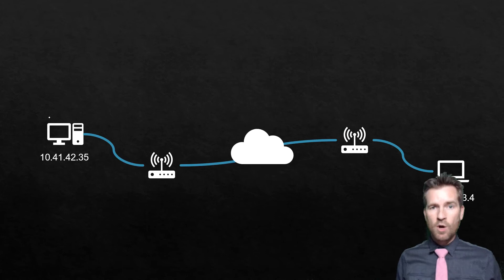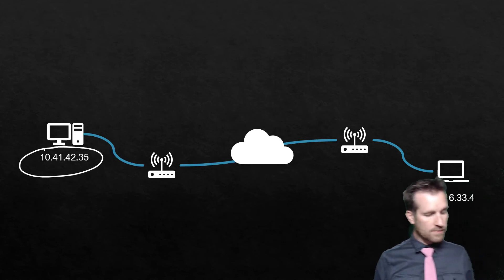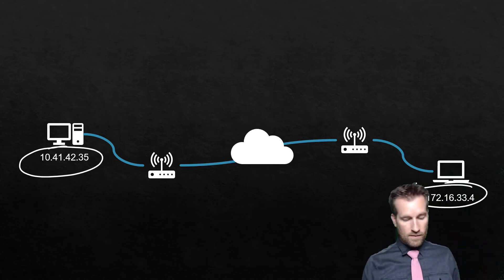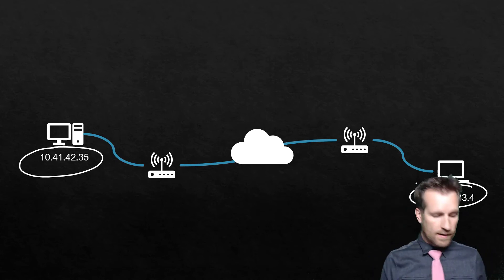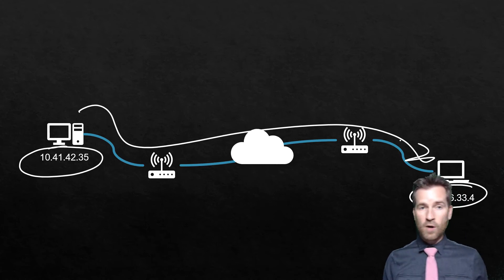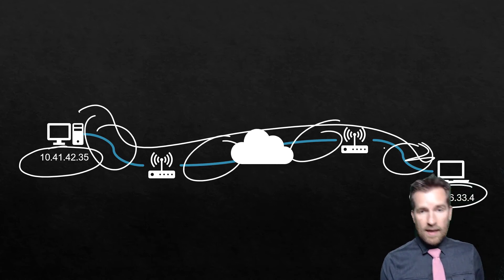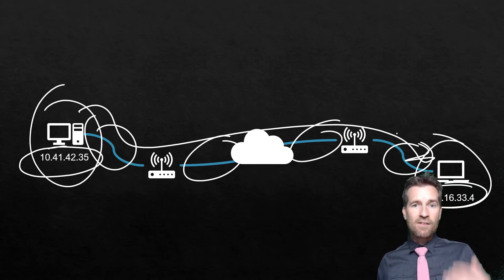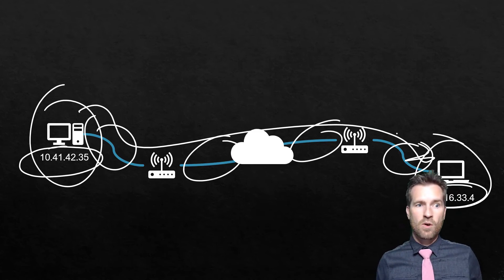Here is an example. We have two computers talking — one with an IP address of 104.1.42.35 and another with an IP address of 172.16.33.4. These two devices want to talk back and forth across many different networks. The hardware could be different, yet they still have to have the same set of rules to facilitate this communication going back and forth. And so that is what a protocol is.